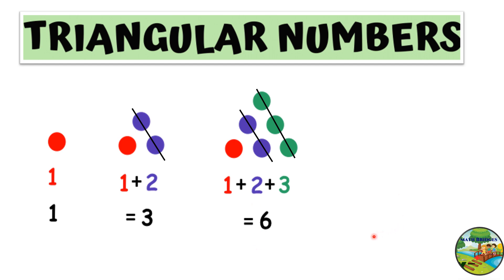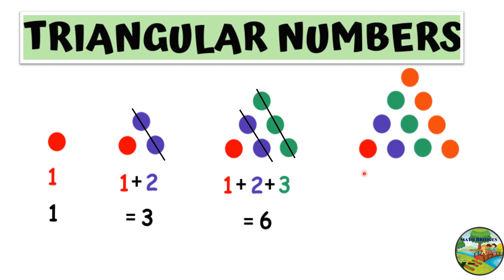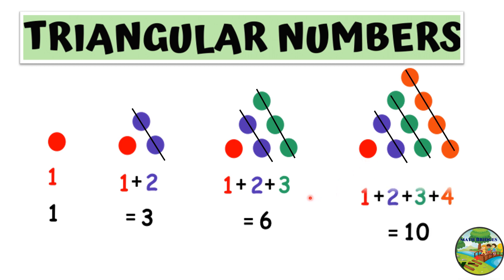Now let's take 4 as the base. If you are taking 4 dots as base, you can guess the answer. Based on the color, we will add 1 red dot, 2 blue dots, 3 green, and 4 orange. That means 1 plus 2 plus 3 plus 4, which equals 10. Like this and so on, you can take 5 as base, 6, 7 — whatever the number — and however many dots have been formed, you can add those numbers. That will be our triangular numbers.